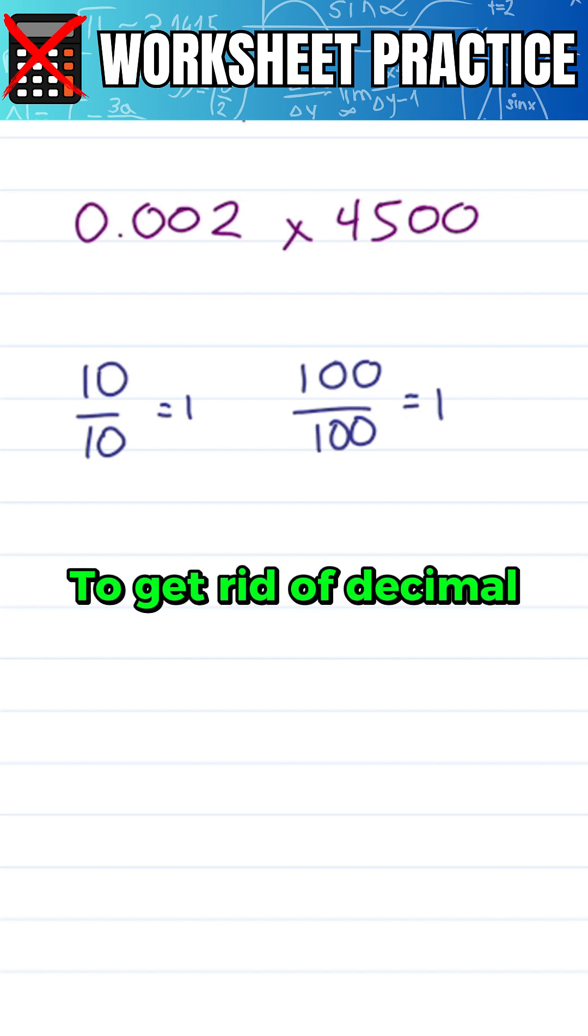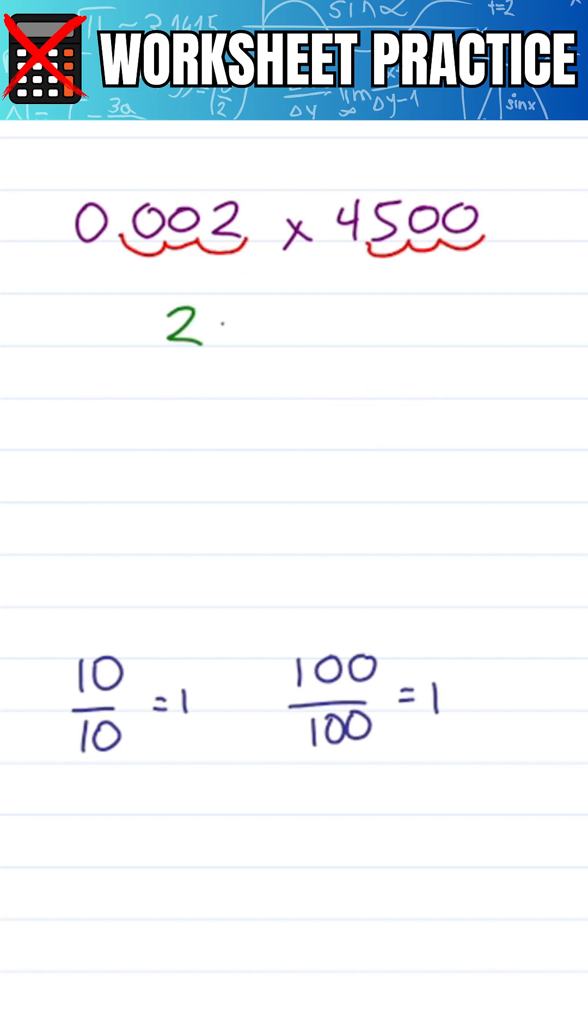To get rid of the decimal, I move this one three times to the right and so I move this one three times to the left. This gives me 2 times 4.5, which I know is 9.